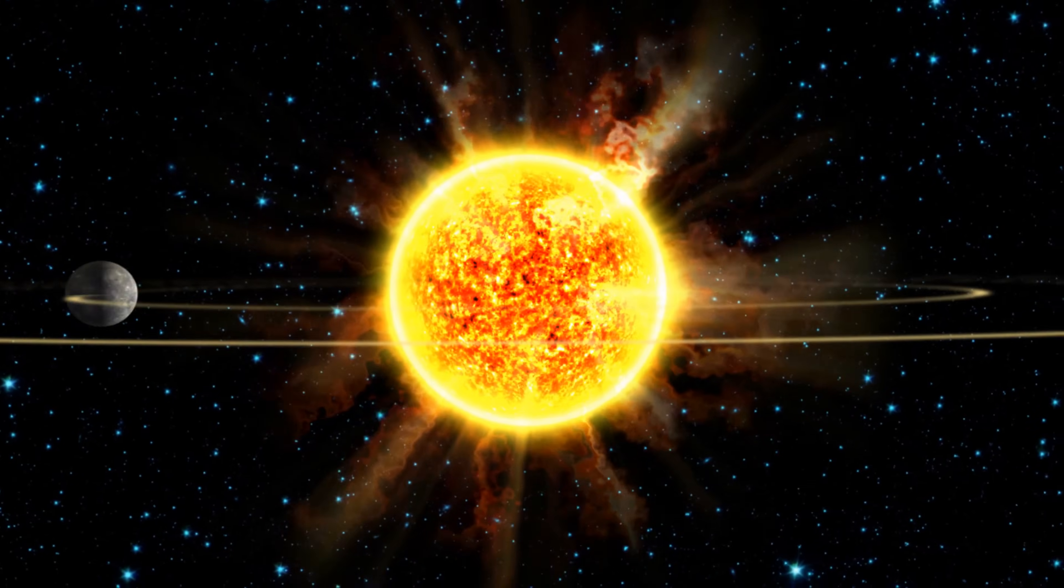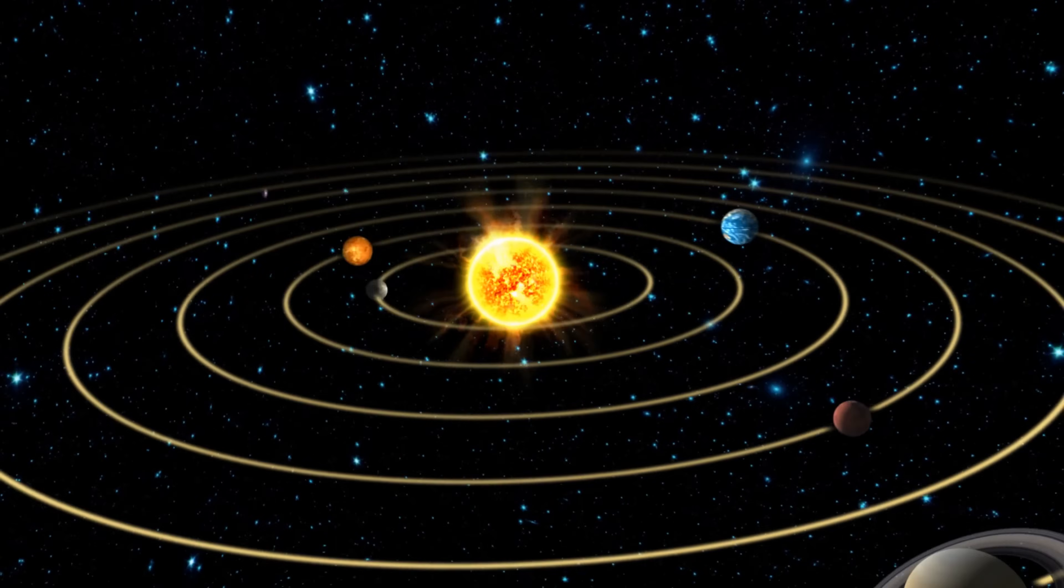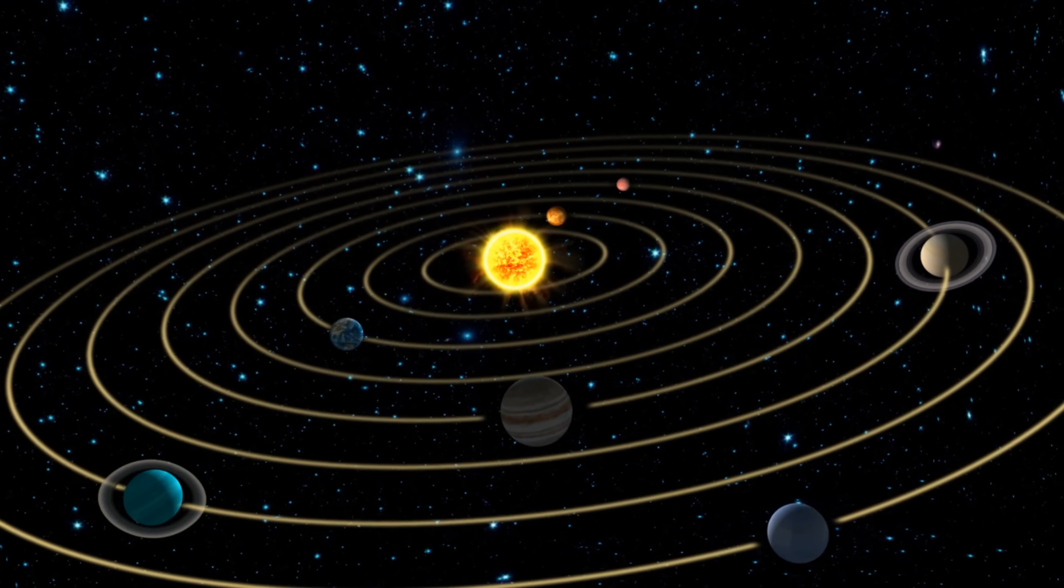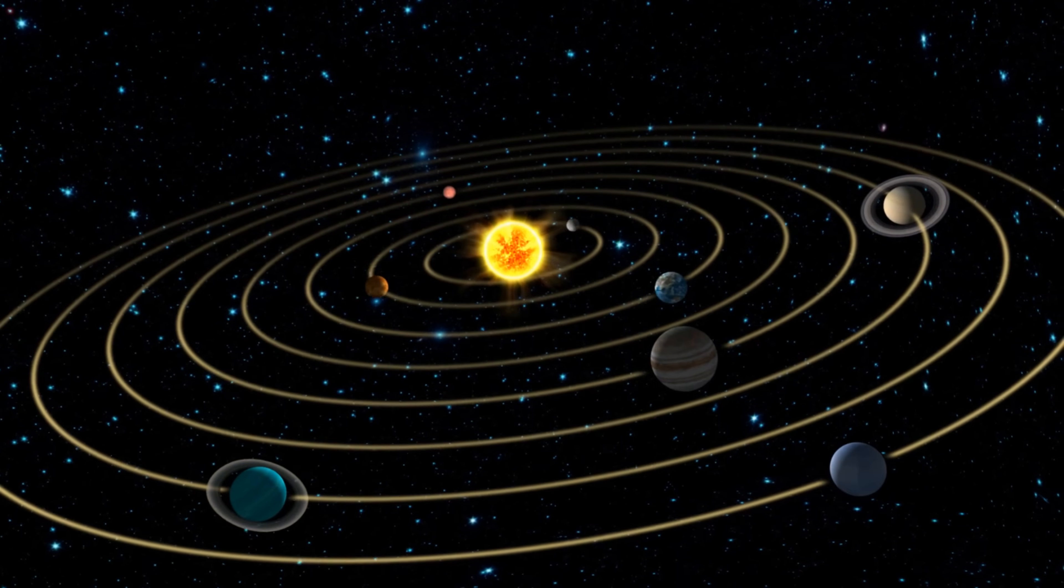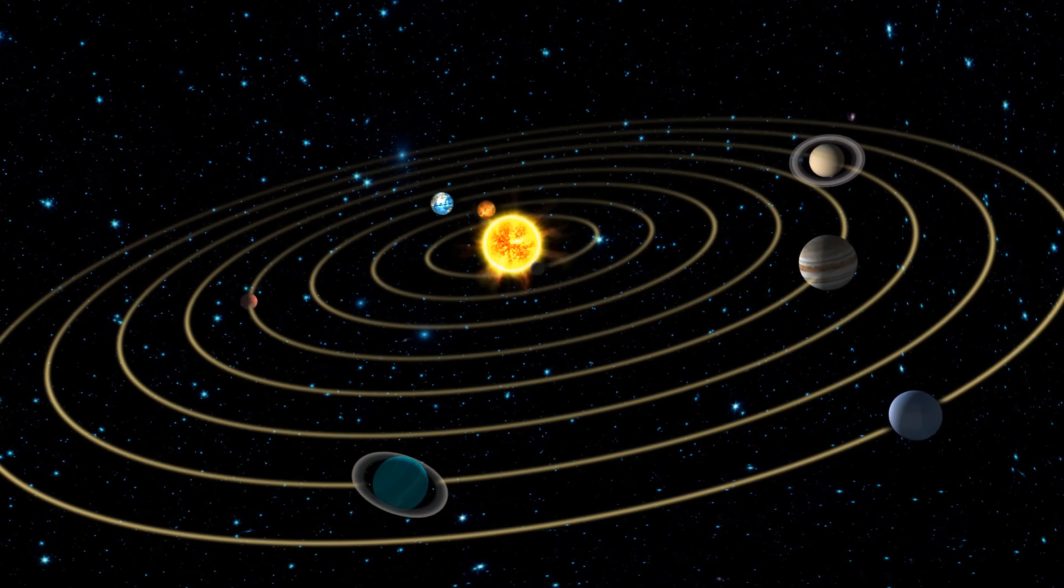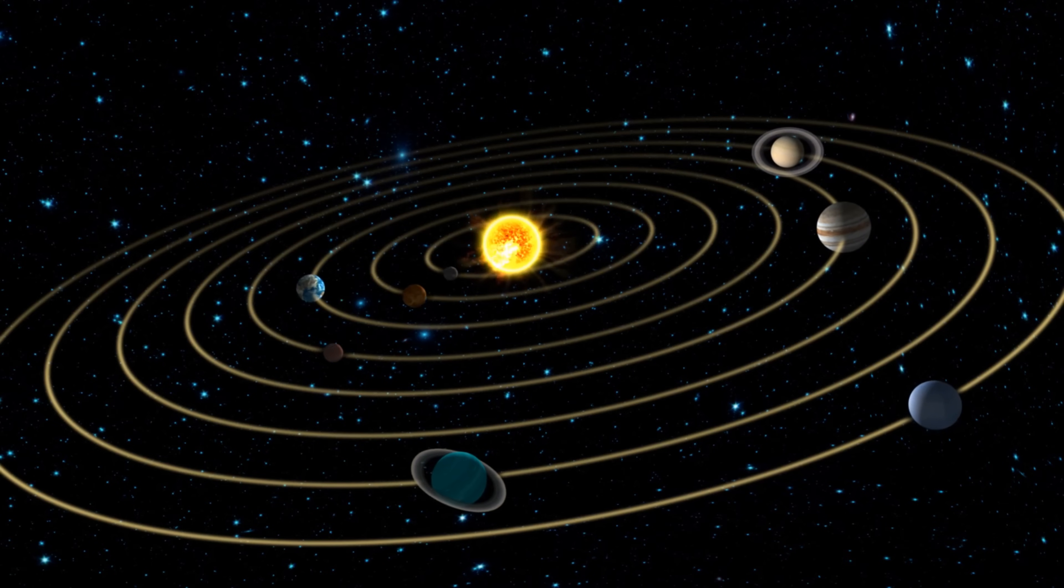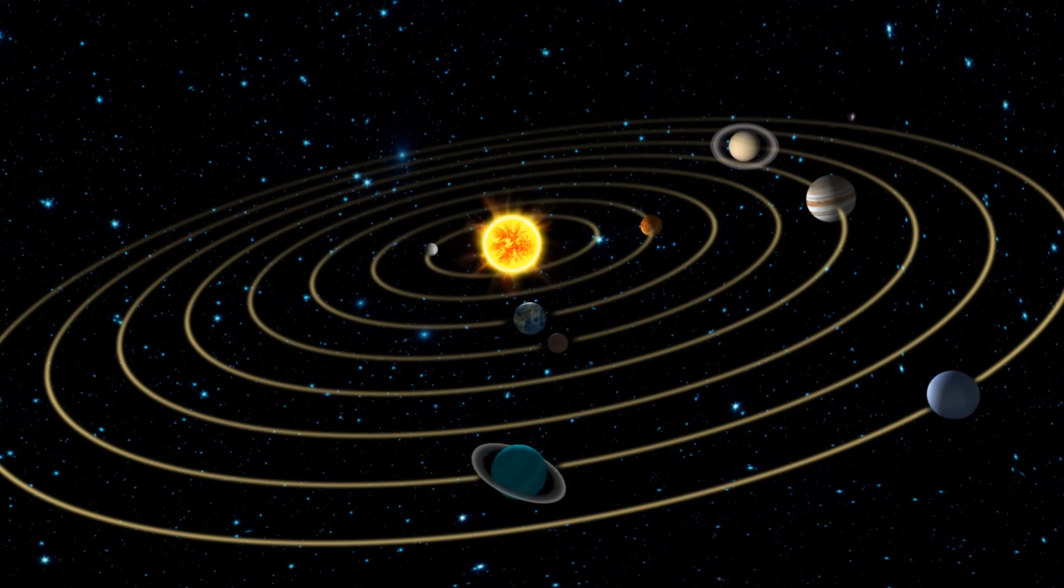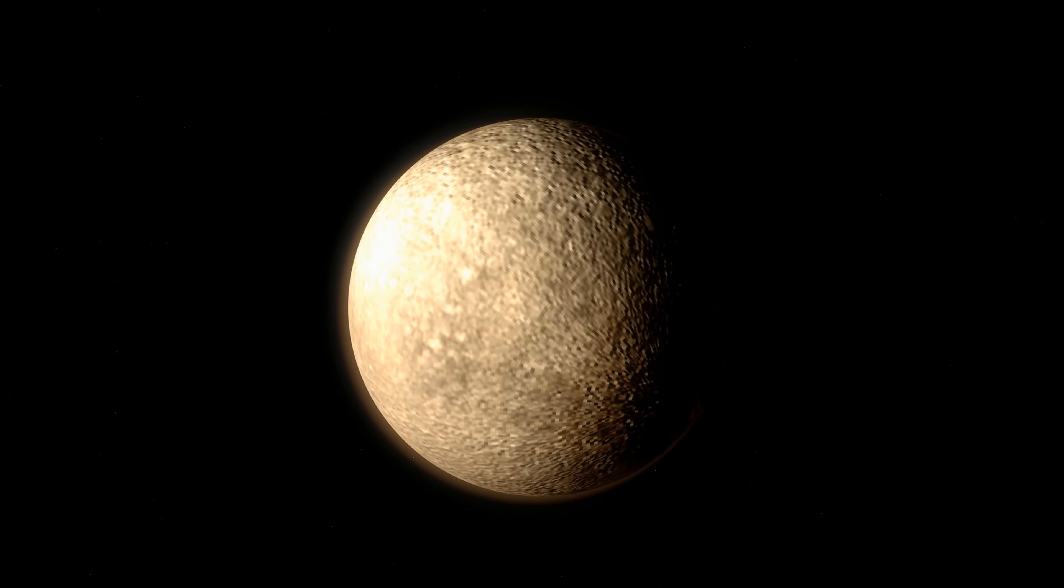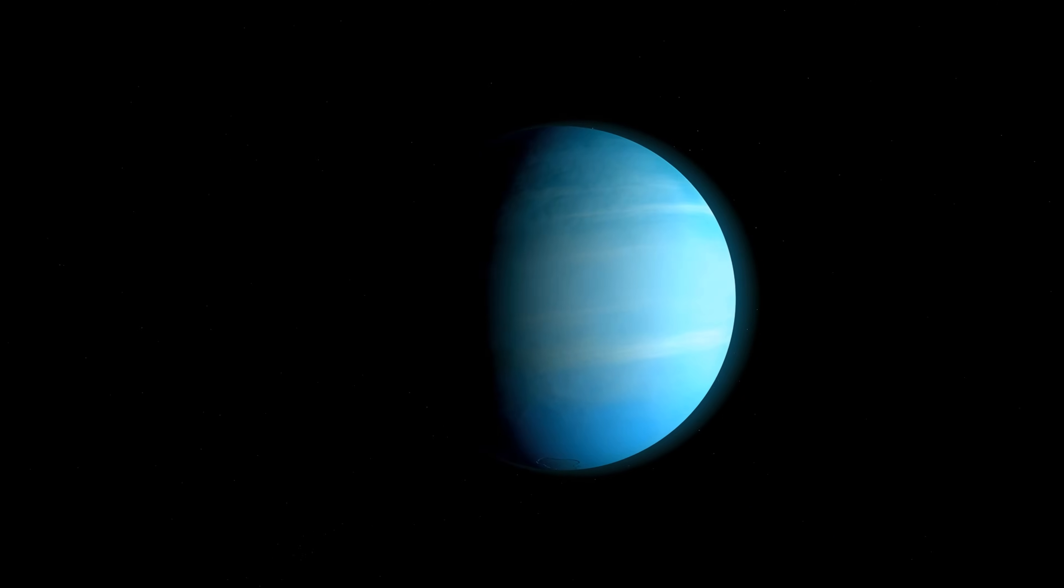Each of the eight planets in our solar system receives light and heat from the sun as it travels in its own special path or orbit around the sun. The orbits of the eight major planets are larger and larger the farther away from the sun they are. Mercury's orbit is the smallest because it's the closest to the sun. Neptune's orbit is the largest because that planet is the farthest away.